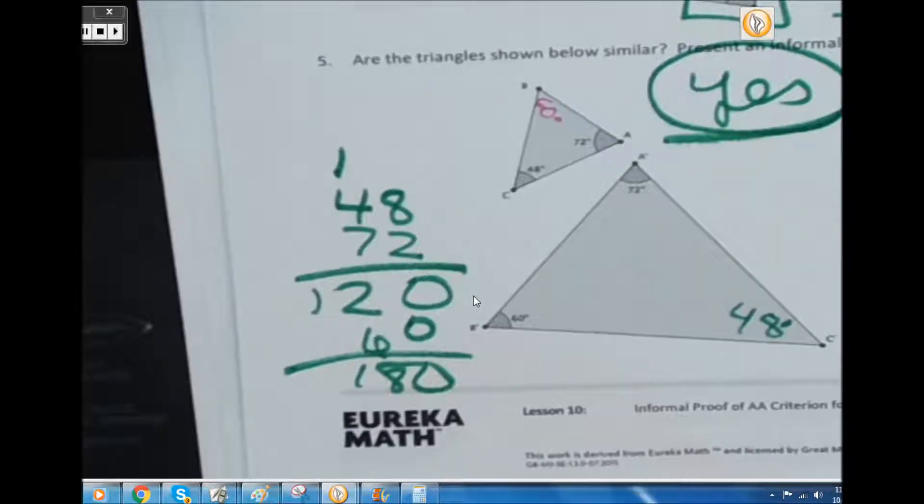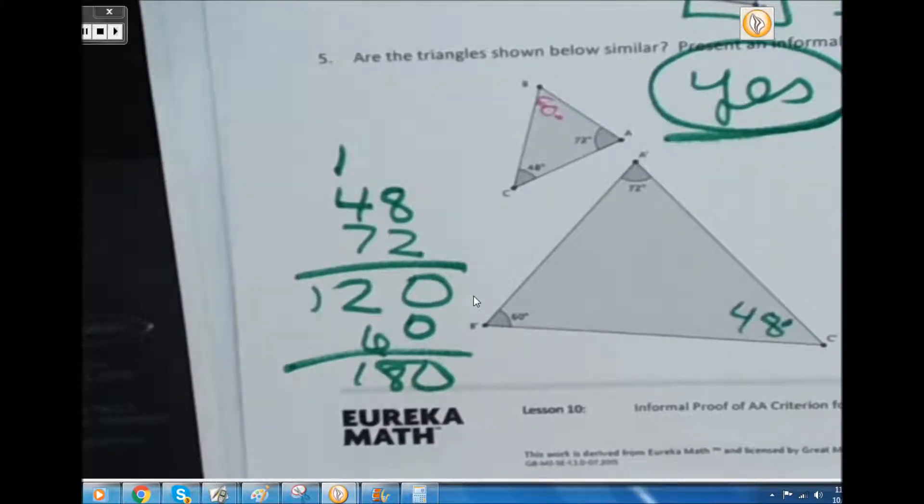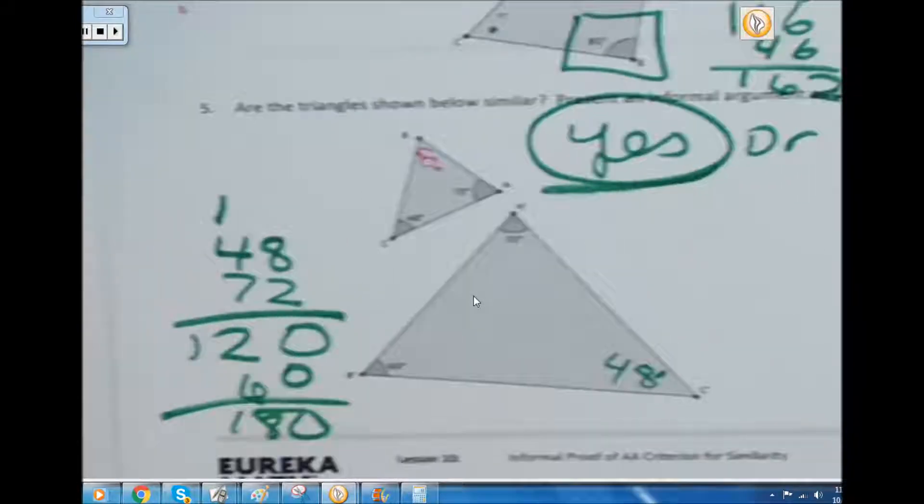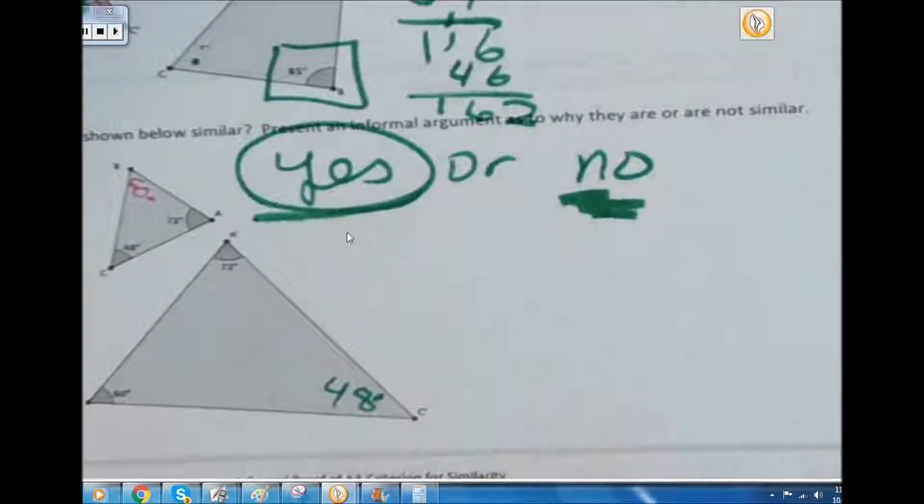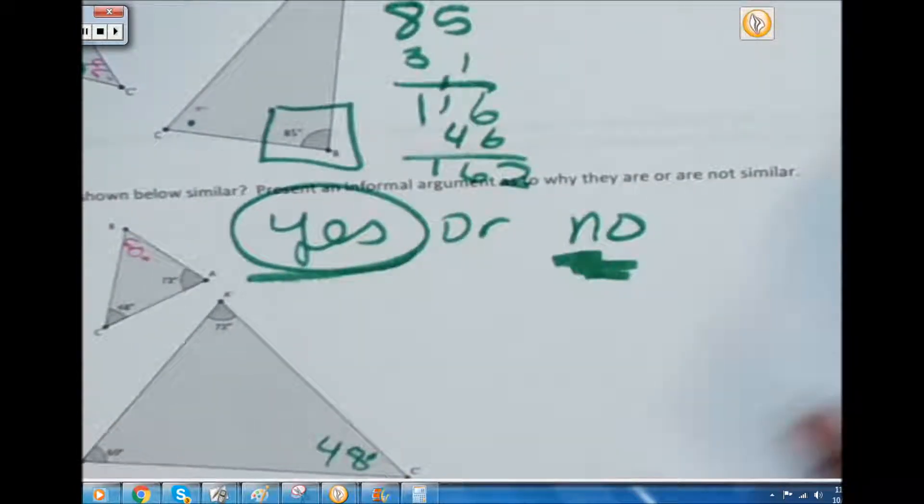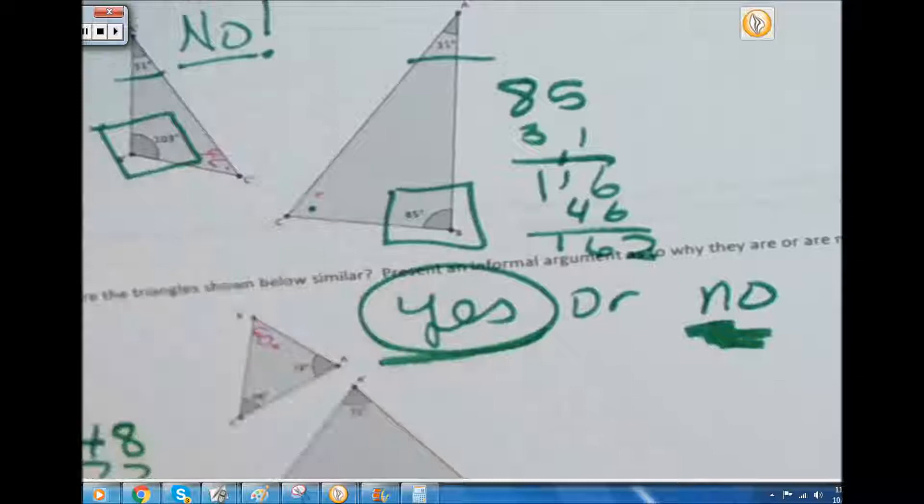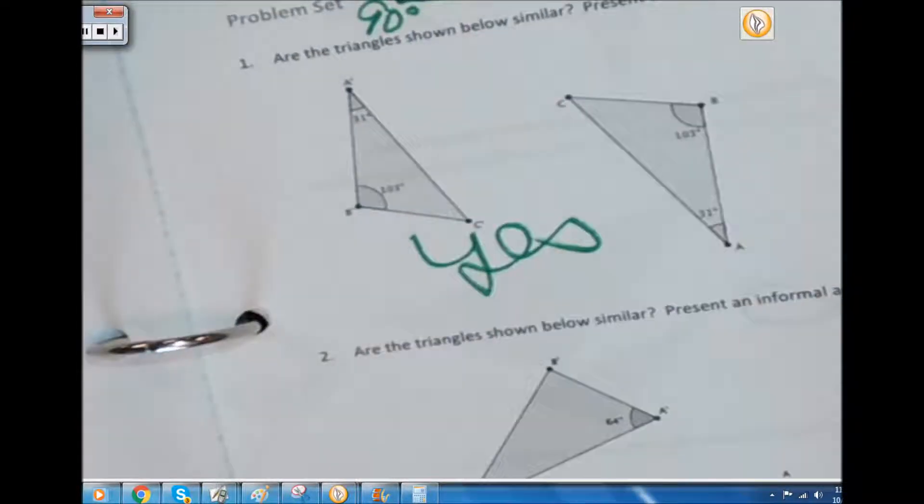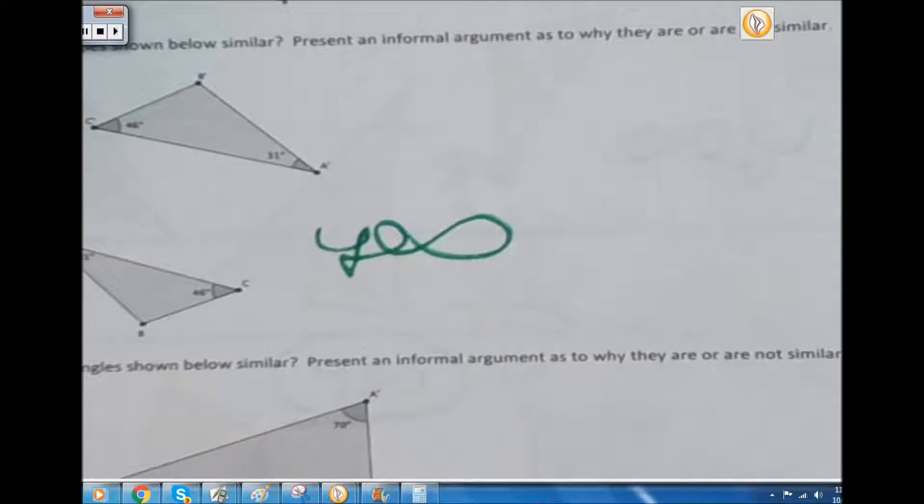All right, so you are going to answer number one on the problem set, which is page 53, and you are also going to answer number four. Let's do one and four and then come back and check your work. Here's what you should have for number one. And here's what you should have for number four. All right, that lesson is complete.